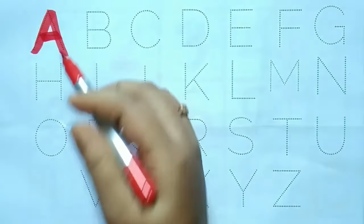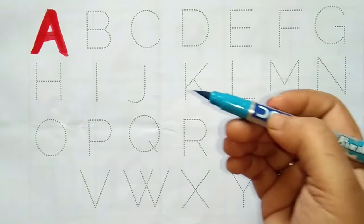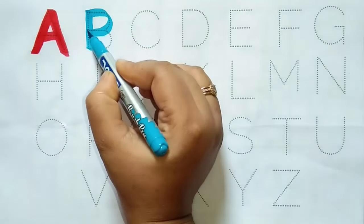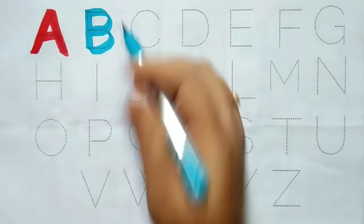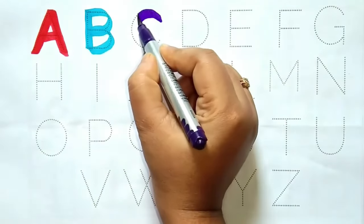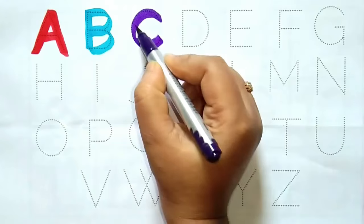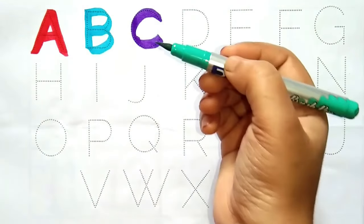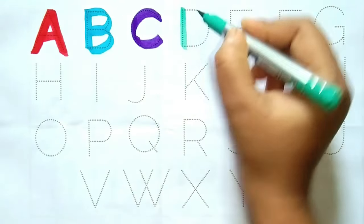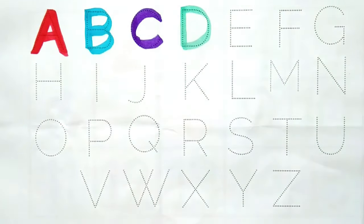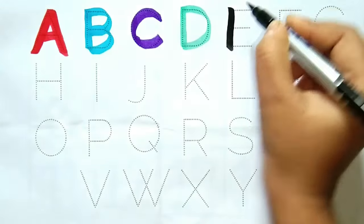A, A for Apple sky blue color. B, B for Balloon purple color. C, C for Cow green color. D, D for Dog black color. E, E for Elephant light green color.